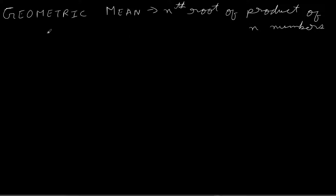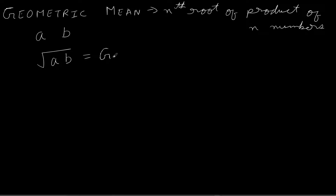For now let us consider two numbers. If we have any two general numbers a and b, then the geometric mean is the square root — since we have just two numbers — of the product of these two numbers. So the geometric mean of a and b is √(a × b).